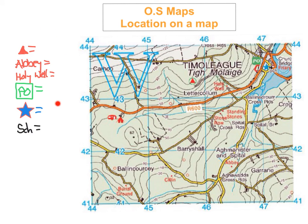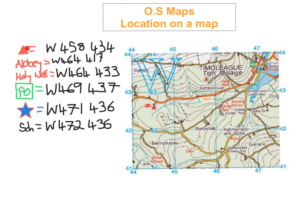The six-figure grid references I want you to find are: the youth hostel, the abbey, the holy well, the post office, the Garda station, and the school — all with subzone W. Here are the answers: Youth hostel is W458434. Abbey is W464417. Holy well is W464433. Post office is W469437. Garda station is W471436. And the school is W472436.